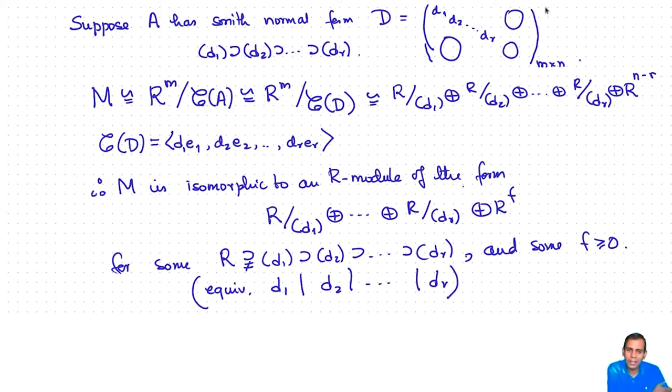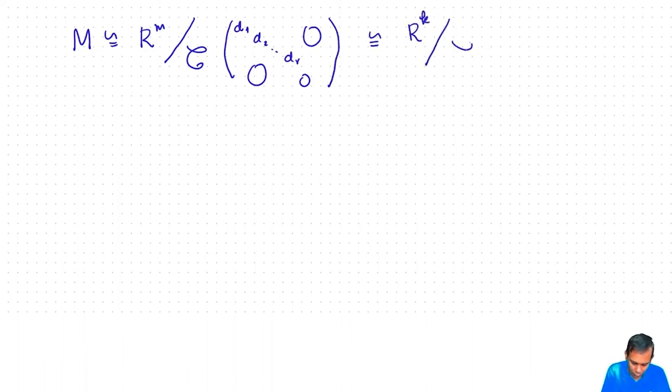So we have seen that every finitely generated R module is a sum of R mod d₁ plus ... R mod dᵣ plus some copies of R. Now the question is, is this decomposition unique? Now suppose we have that M is isomorphic to R^m mod column space of d₁, d₂, ..., dᵣ. And at the same time it is also isomorphic to R^k mod column space of e₁, e₂, ..., eₛ. Even the number of generators, we may have taken a lot of generators, a lot more than we needed.